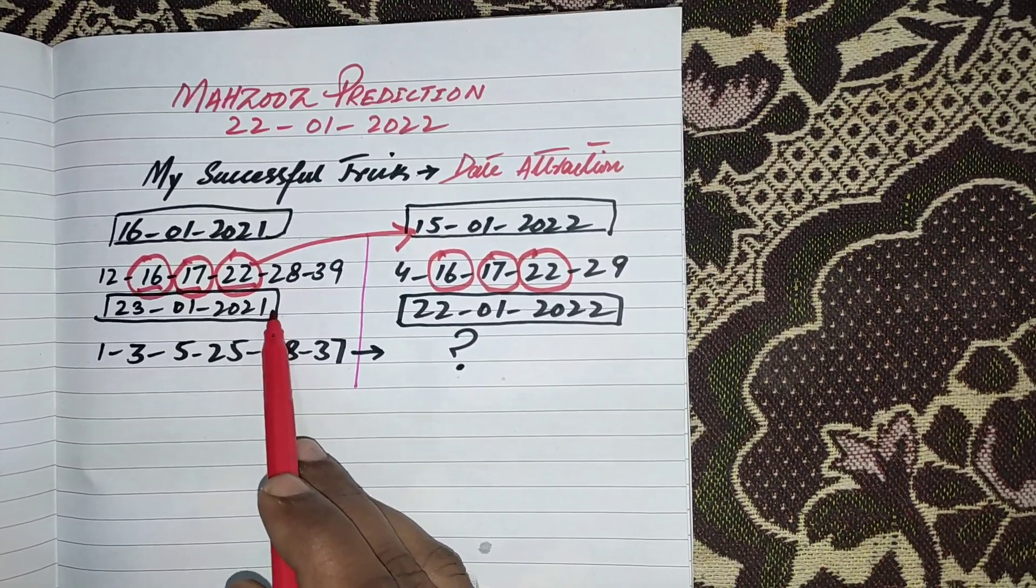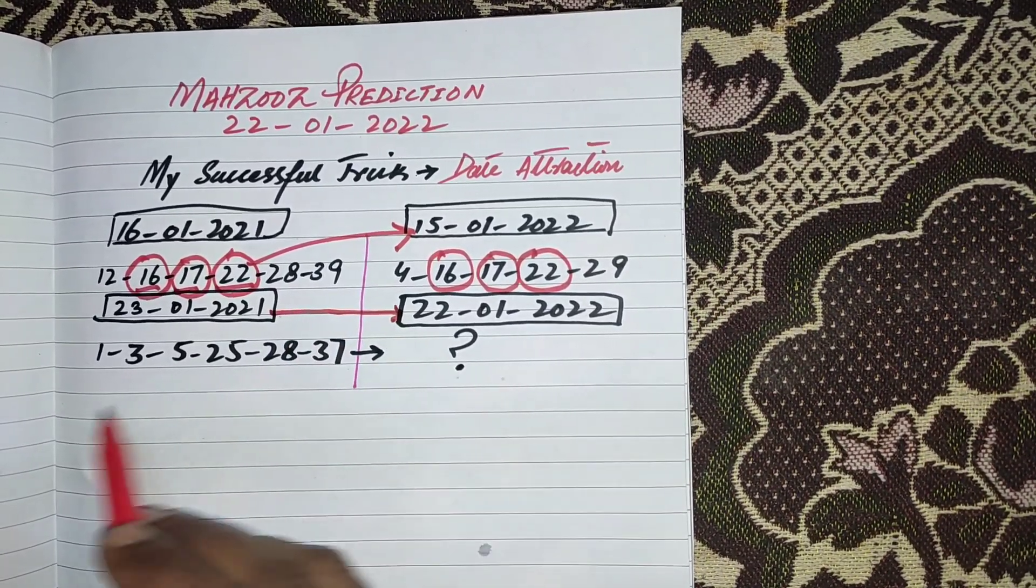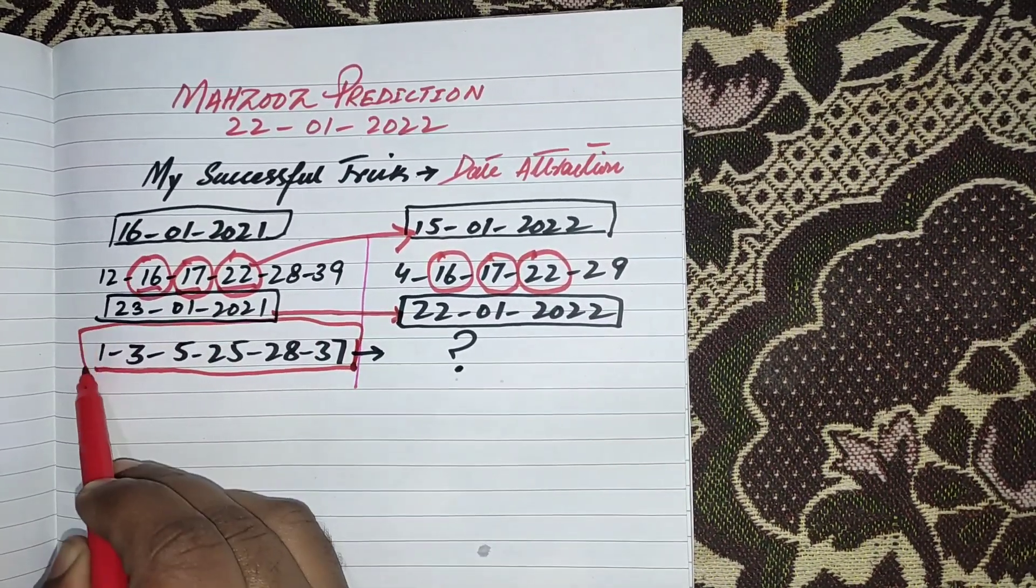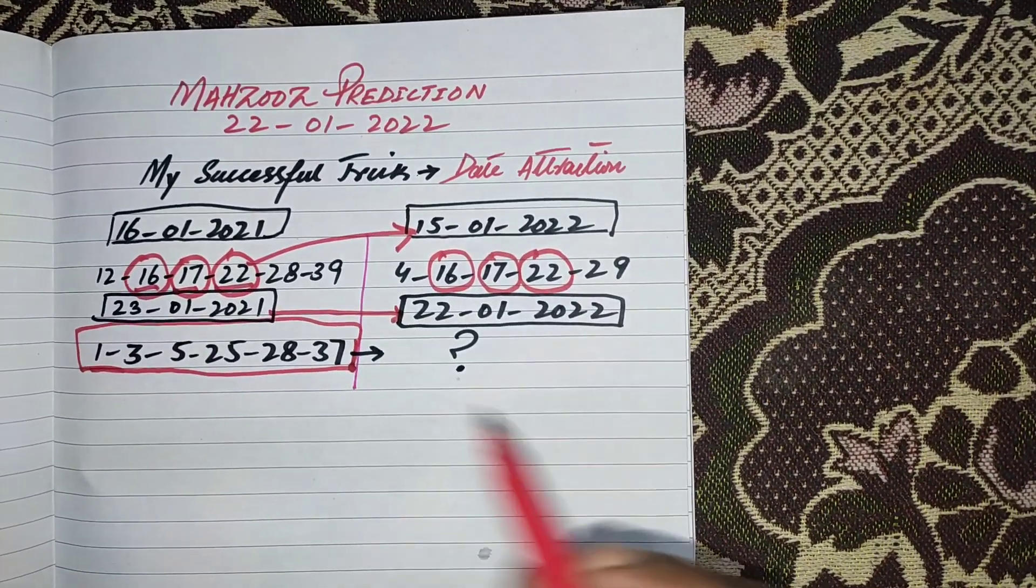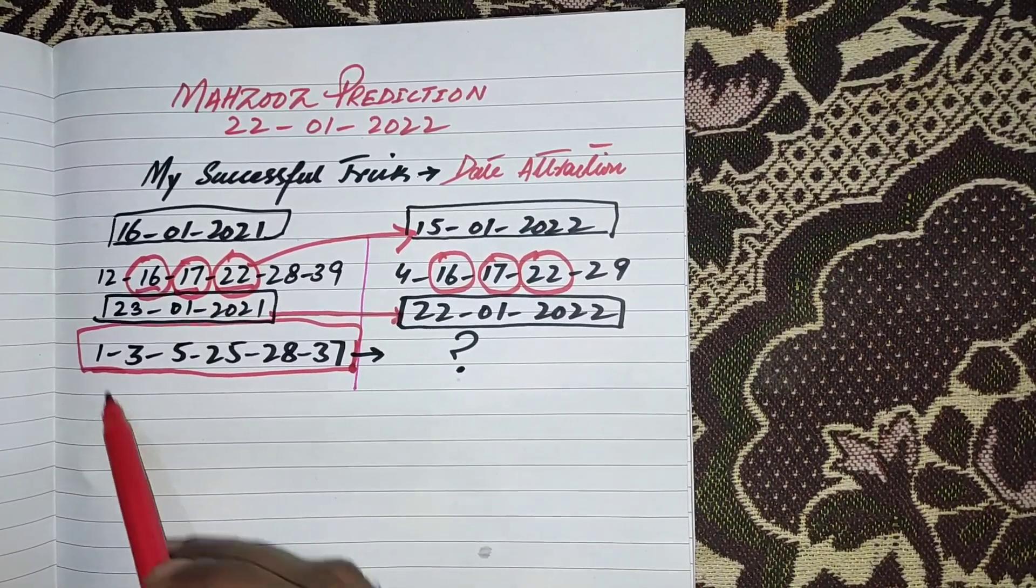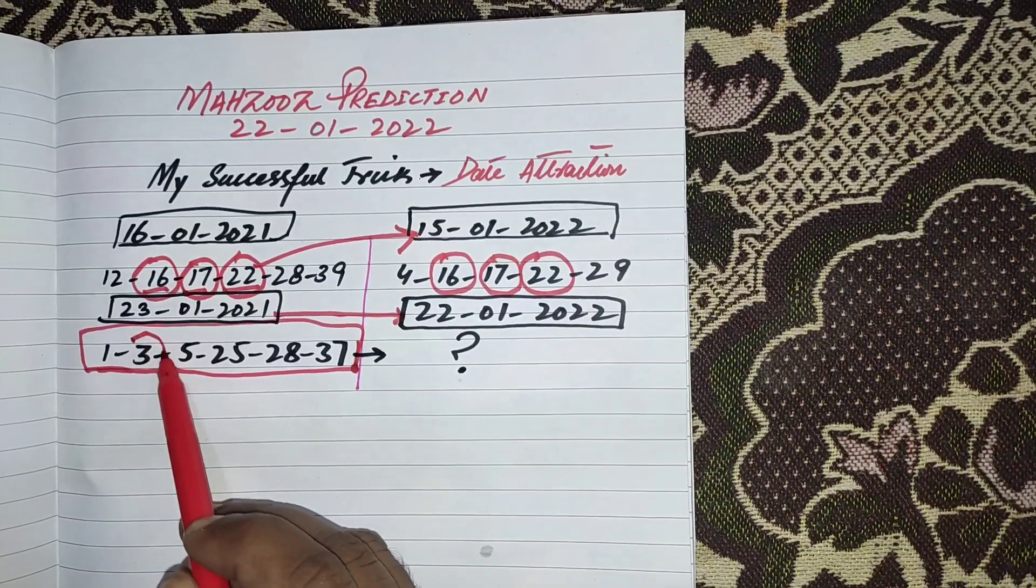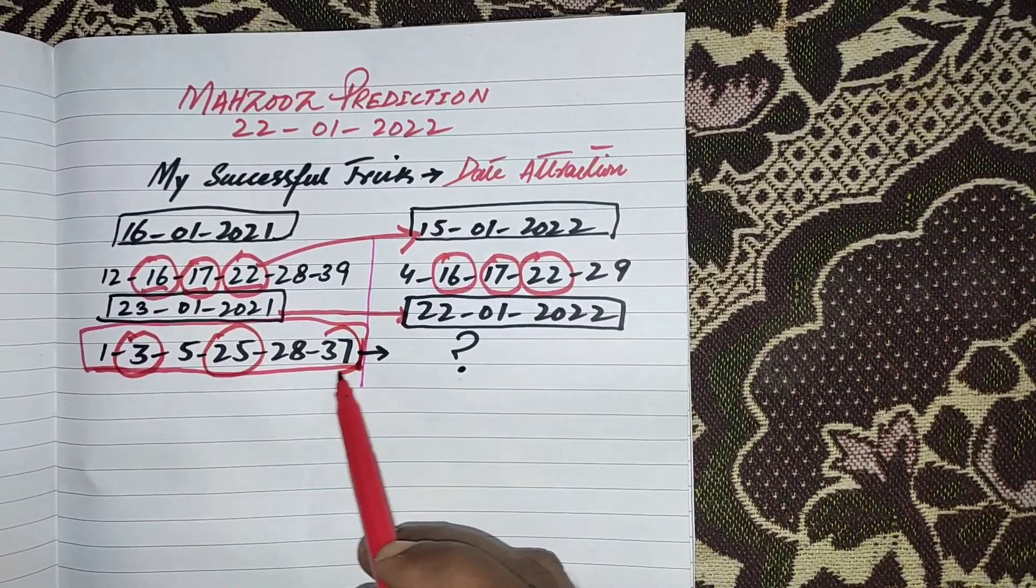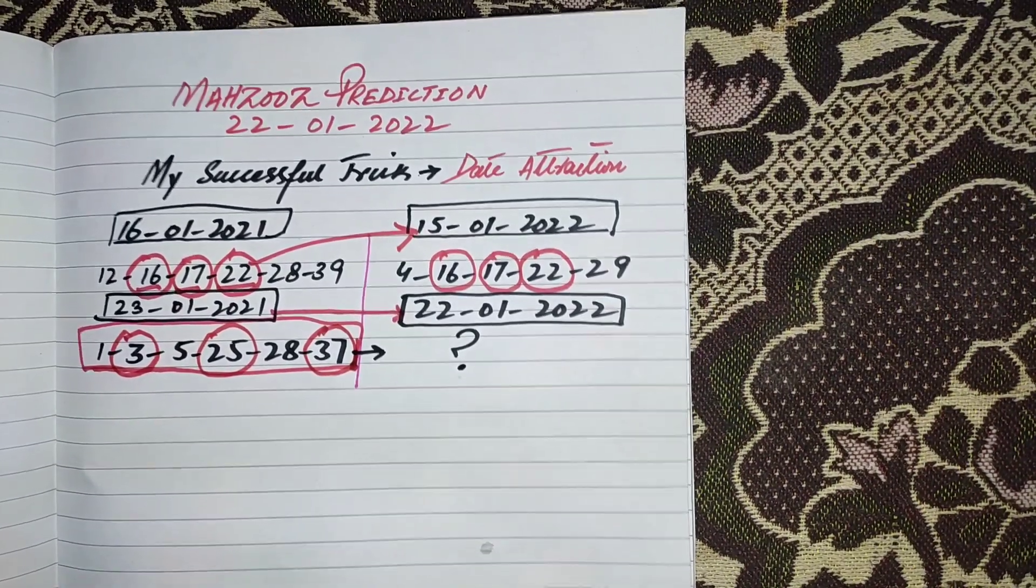Now if the date attracts, then you can select your numbers from this result if you like. According to my research, from these numbers I placed in my 16 powerful numbers: 3, 25 and 37. You can also select from these numbers if you like.